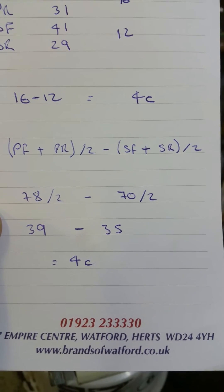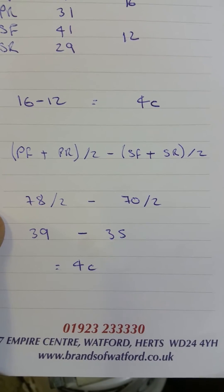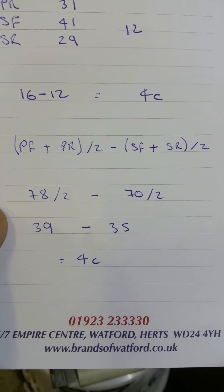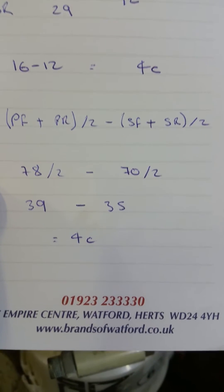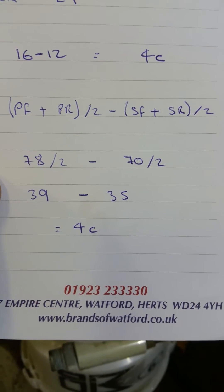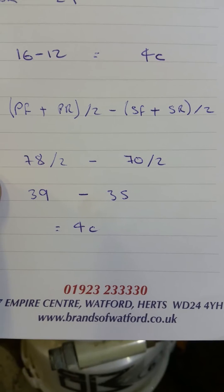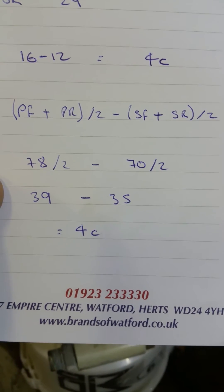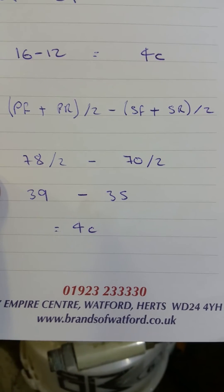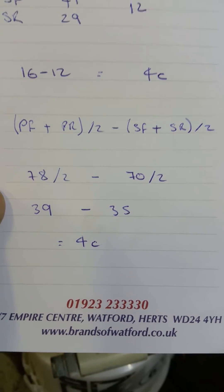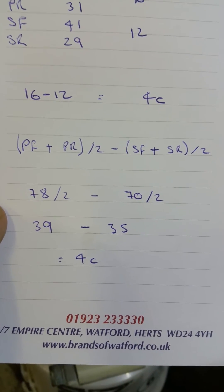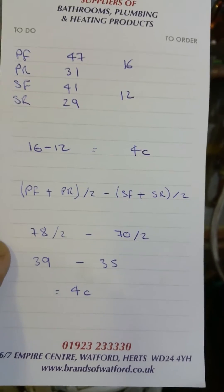Applying numbers to that formula and working out both sides gives 78 divided by 2 minus 70 divided by 2, which is 39 minus 35, and that does give us the same answer of 4 degrees. This is at full load — it's not running at full load right now.